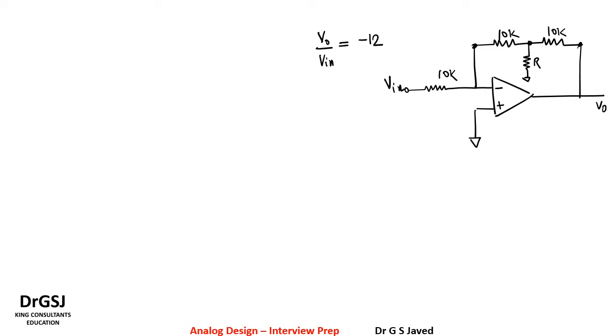Hello, in the given circuit they have given the ratio of V out by V in is equal to minus 12. We need to find the value of the R resistance present over here. Now let us begin. Before that, let us find out the conditions of the ideal op amp.